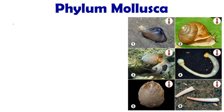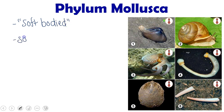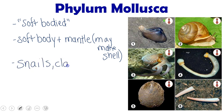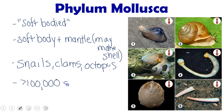Welcome back everyone. This will be our lecture on mollusks, which are my absolute favorite phylum of invertebrates. This word mollusk means soft-bodied. Our mollusks are characterized by a soft body with a specialized tissue called the mantle, and this mantle is the tissue that may make a shell for the mollusk. Some common examples of mollusks are things like snails, clams, and octopus. There are over 100,000 known species of mollusks.